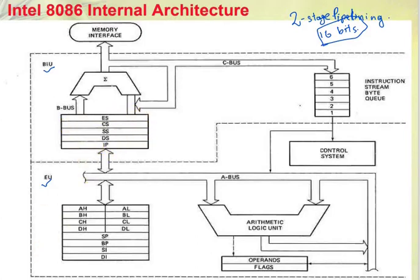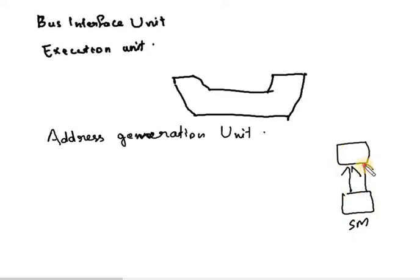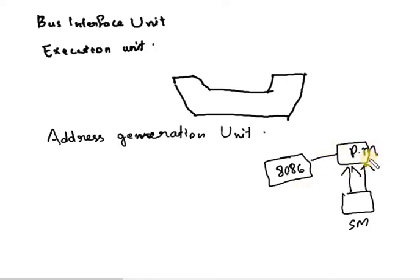As I always do, I would like to draw a figure. Instructions and data are loaded into primary memory and processed by the microprocessor — in this case, the 8086 microprocessor. Here we have different segments that divide memory, which is called memory segmentation.